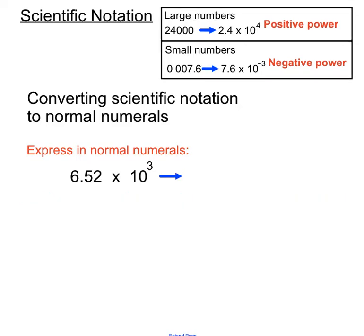The power of 10 gives us an indication of how many moves to make with the decimal point. So in this one we'll move the decimal point 3 places to the right. When a move to the right doesn't have a digit in it, we fill that space with a 0 to hold the place value. So if the decimal point moves to the end after the 0, we'll have created the number 6,520 — our conversion back into normal numerals. The key is to look at the index, the power of 3, which indicates how many jumps to move the decimal point.